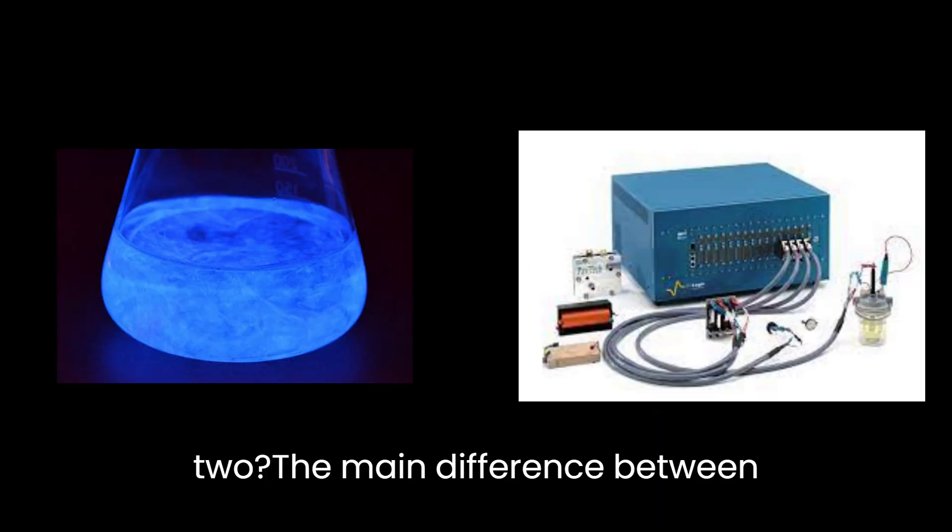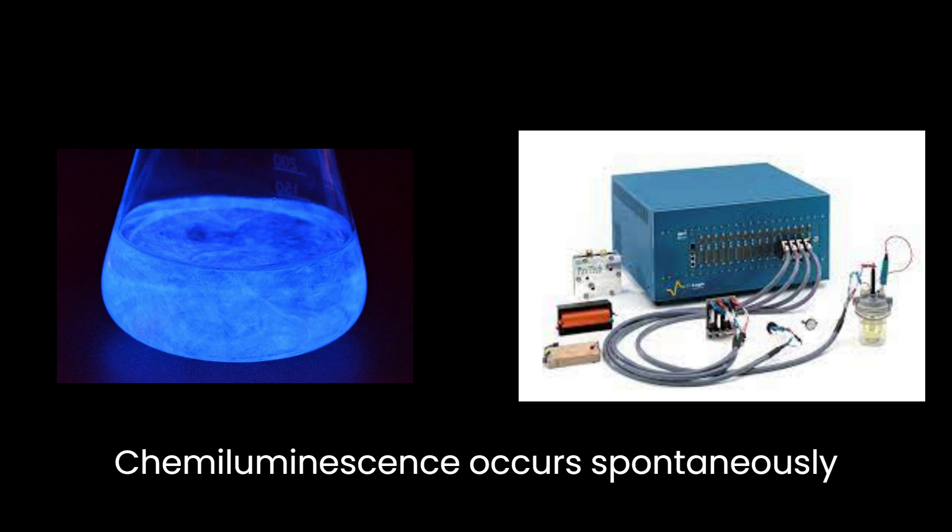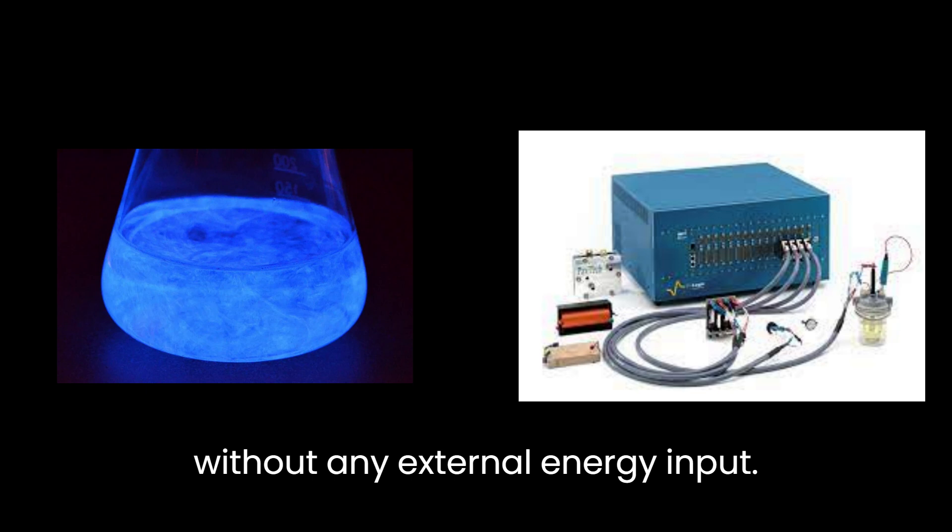Differences between the two: The main difference between chemiluminescence and electrochemiluminescence is the driving force behind the chemical reaction. Chemiluminescence occurs spontaneously, without any external energy input.